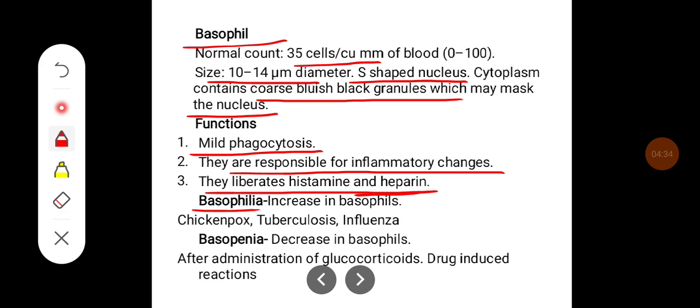Basophilia is a condition where there is increase in the basophil count. It can happen in chickenpox, tuberculosis and influenza. Basopenia is a condition where there is decreased basophil count. It can happen after the administration of glucocorticoids and during drug-induced reactions.